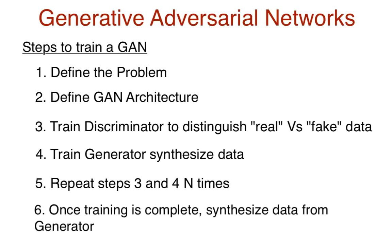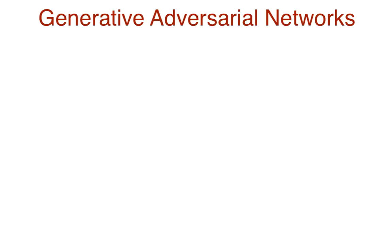Once the training is complete, we synthesize data from the generator. This can be used to augment our true dataset, or just used as-is because it's really cool. Now we know the basic components of a GAN and how it works. Let's get some more intuition on the loss function for our discriminator.